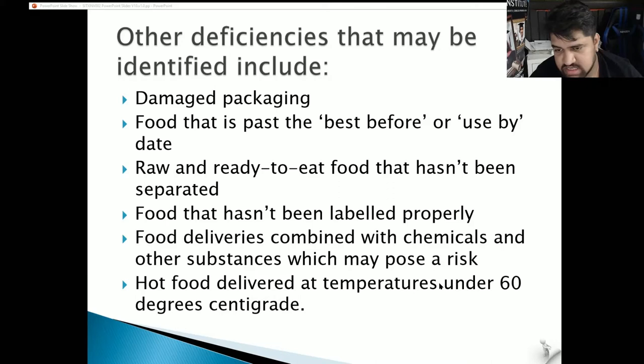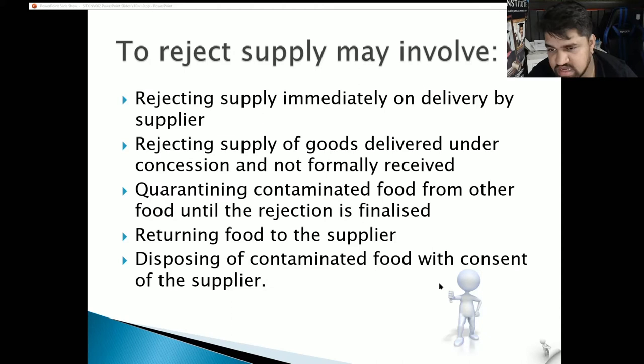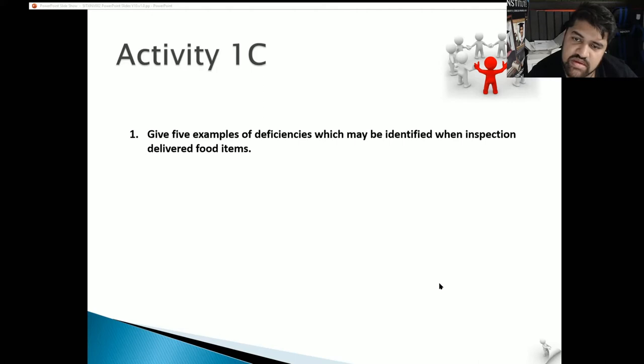Hot food delivered at under 60 degrees Celsius is also a deficiency. To reject supply, you may reject it immediately on delivery, reject goods delivered under concession, quarantine contaminated food from other food until rejection is finalised, return food to the supplier, or dispose of contaminated food with consent of the supplier.